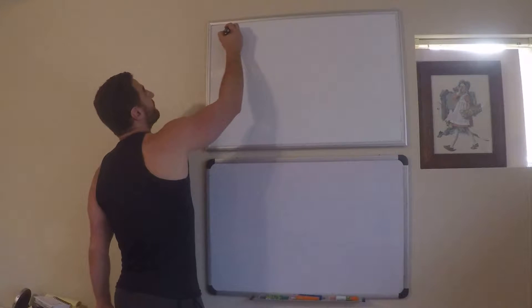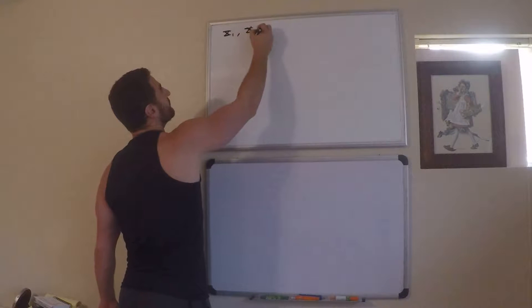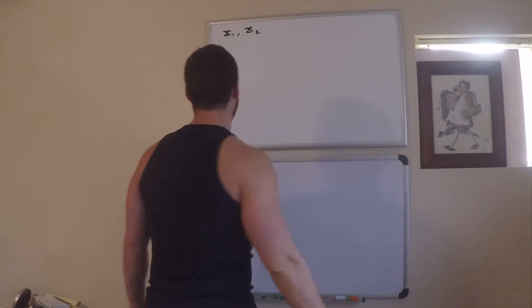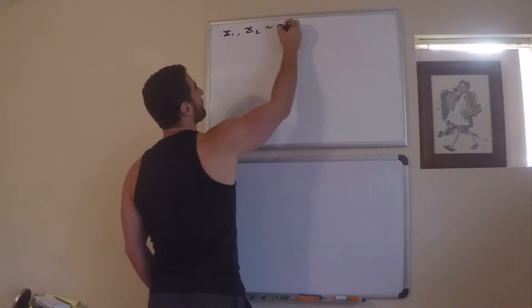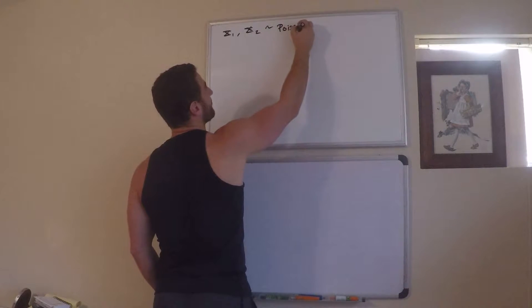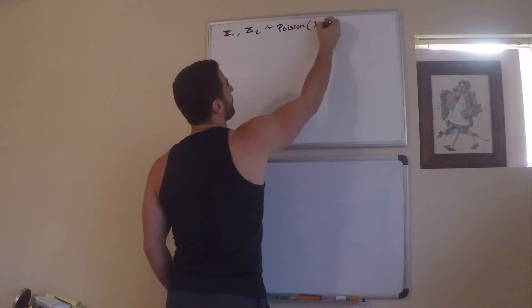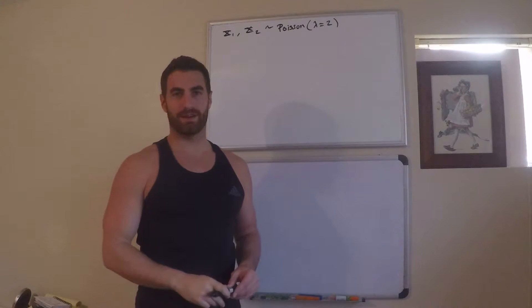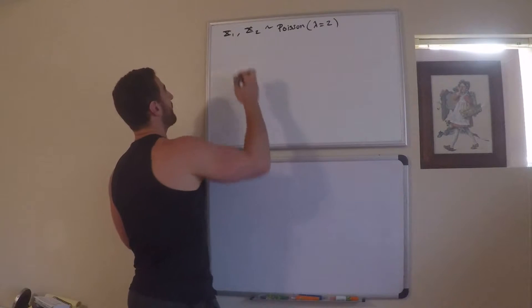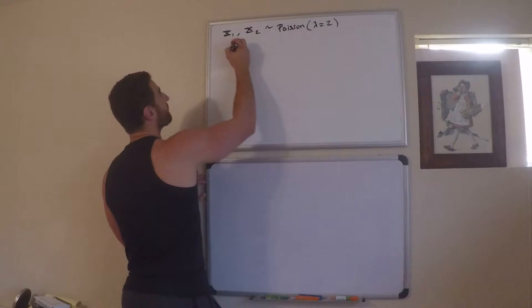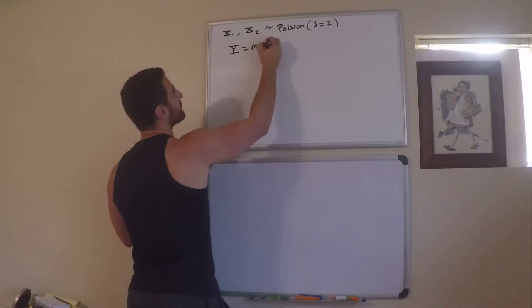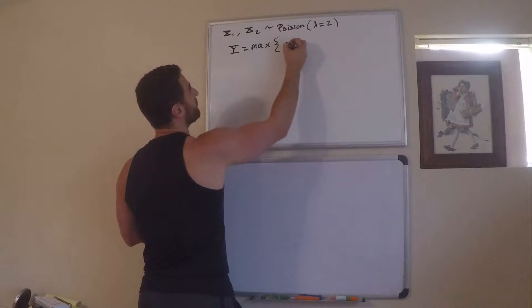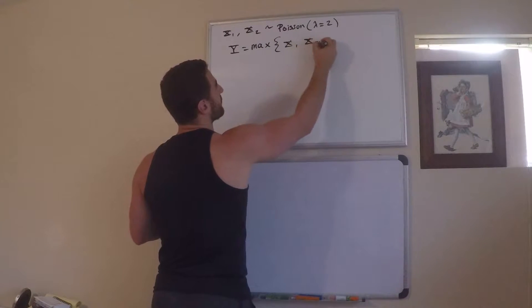We have x1, x2, random variables distributed by the Poisson distribution with lambda equals 2, and I want to define a new random variable. I want to define y to equal the max of these two random variables, so x1, x2.